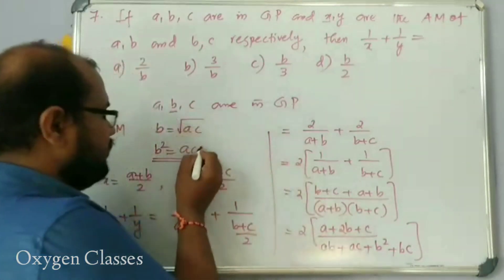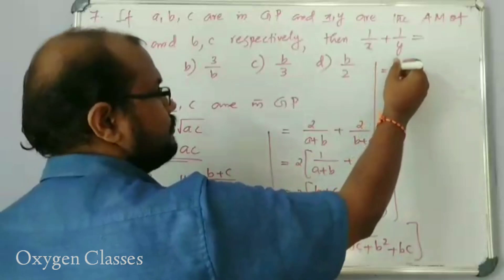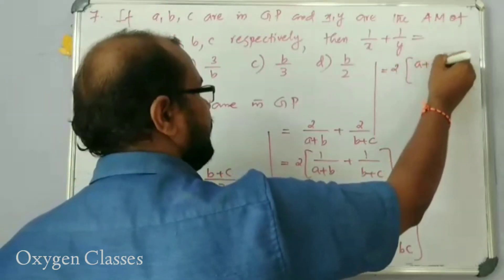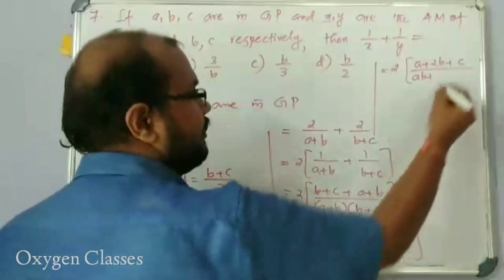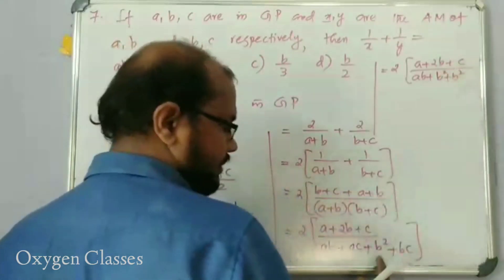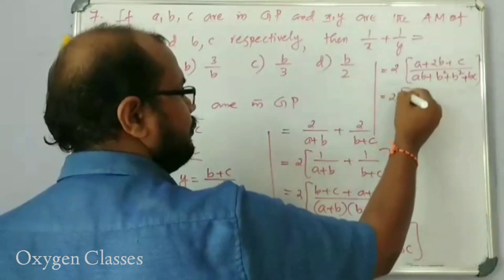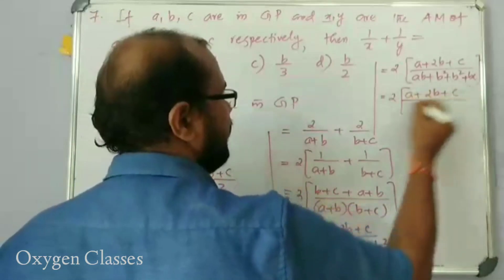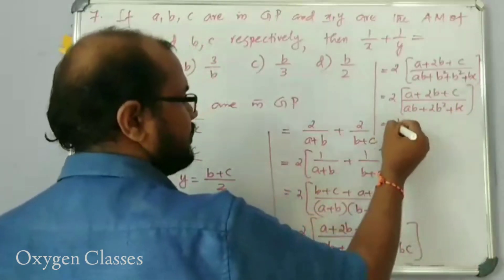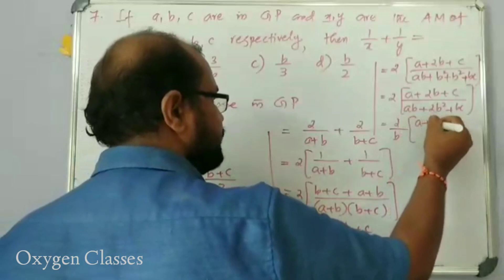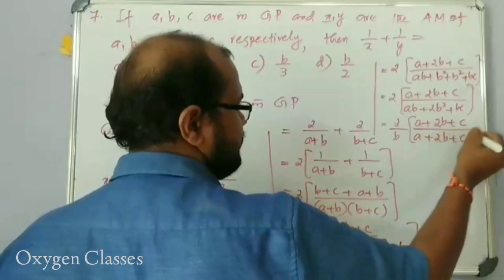So this simplifies to 2(A plus 2B plus C) divided by AB plus 2B squared plus BC. Factoring B outside, we get 2(A plus 2B plus C) divided by B(A plus 2B plus C), which simplifies to 2 by B.